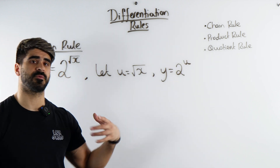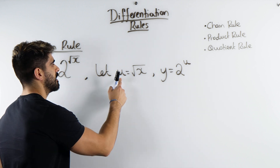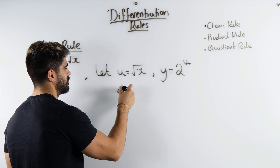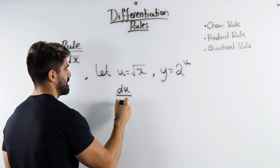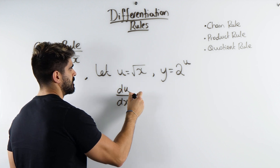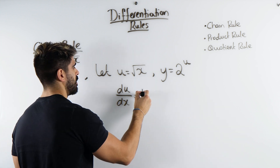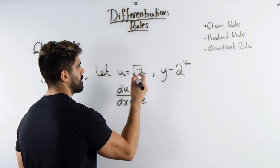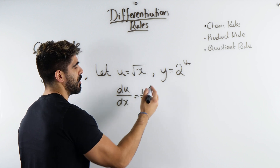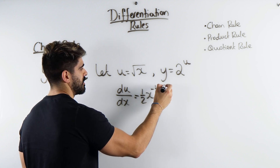What we're going to do is differentiate these separately. Here we're going to have du by dx. Now u equals root x, which is x to the power of a half. So we bring down the half, then we knock one off the power. So power half minus 1 is minus a half.